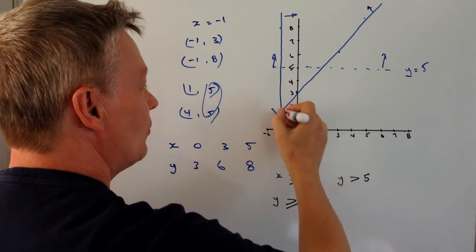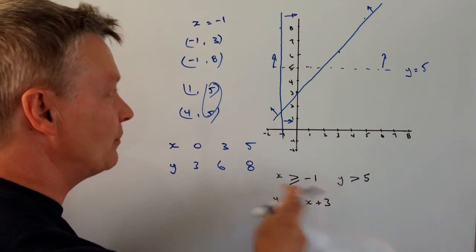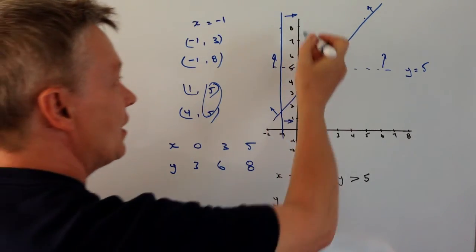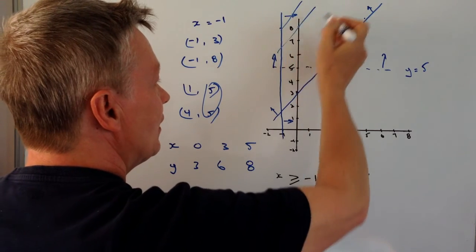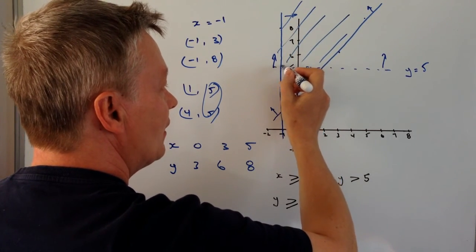OK, so what we're talking about is the inequality that solves or that's bounded by these lines is going to be this in here. So it's actually going to stop here.